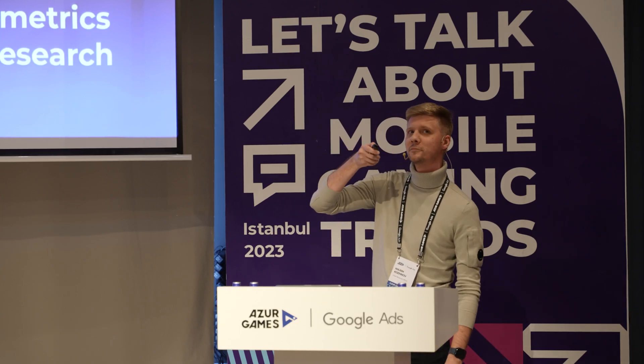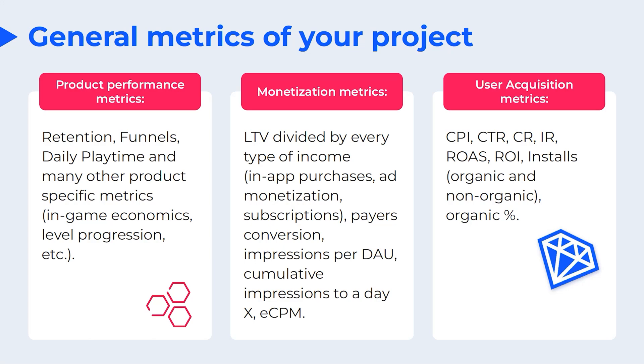Let's discuss general metrics of your project — metrics which are known by everybody and used by everybody. We can divide them into three groups. First of all, it's product metrics such as retention, daily playtime, and many other product-specific metrics. The second group is monetization metrics. Depending on what type of income you have in your apps, we divide them by in-app purchases, ad monetization, and subscriptions. The main metric here is LTV, of course. We also look at impressions, daily impressions, cumulative impressions, and things like this.